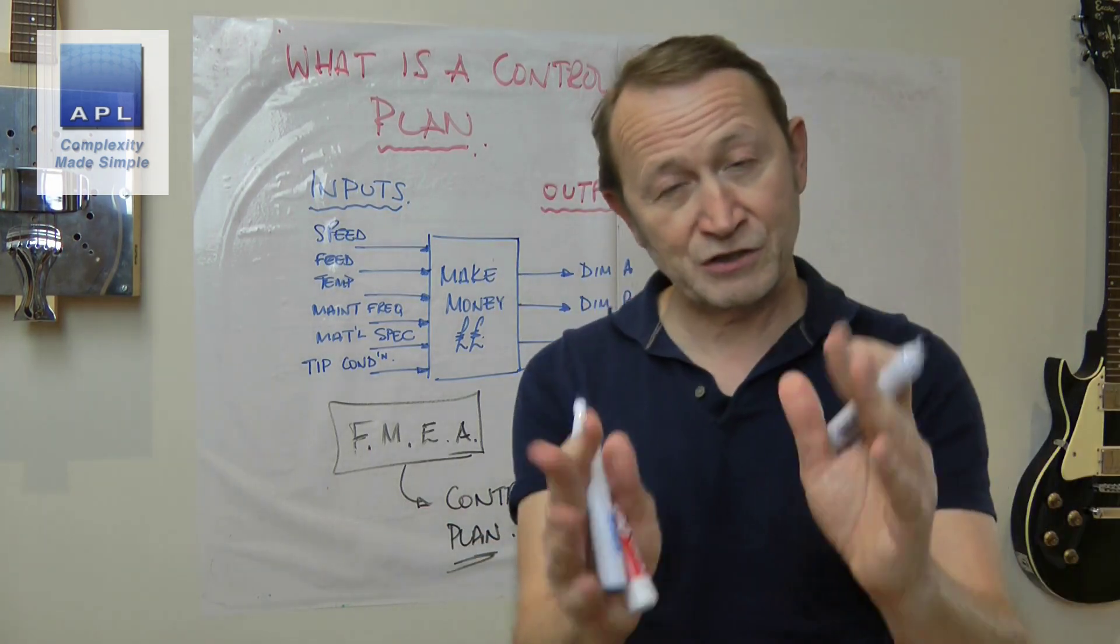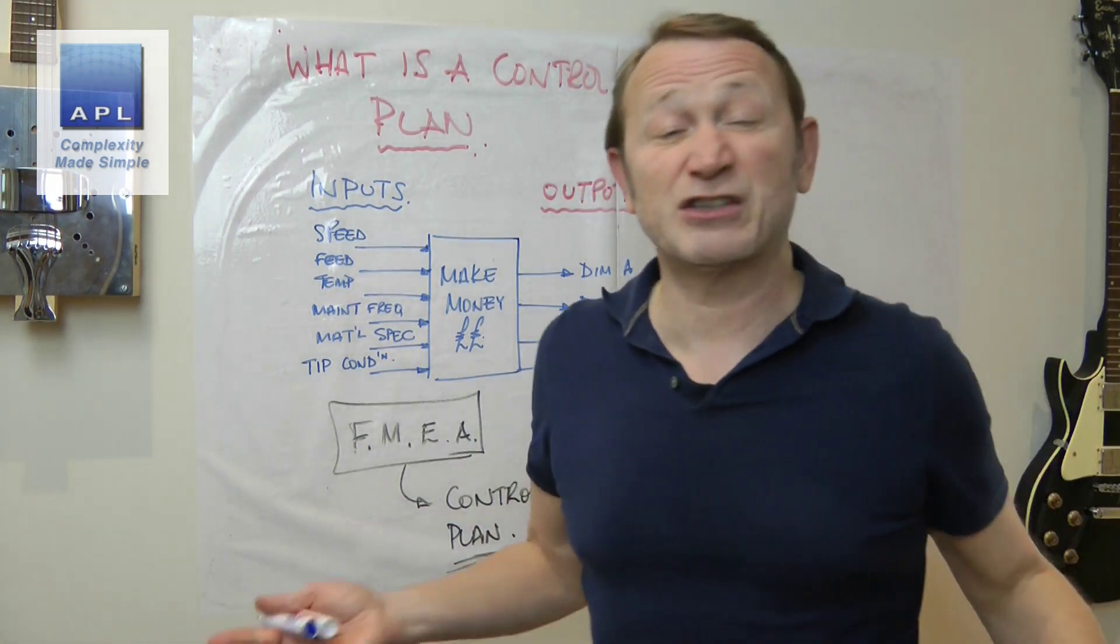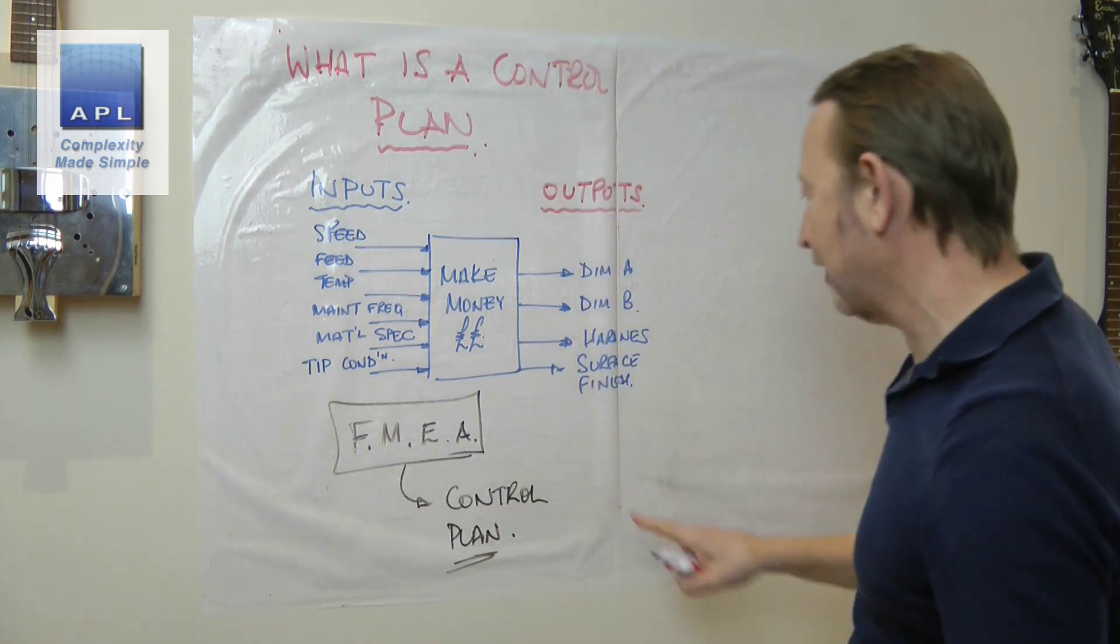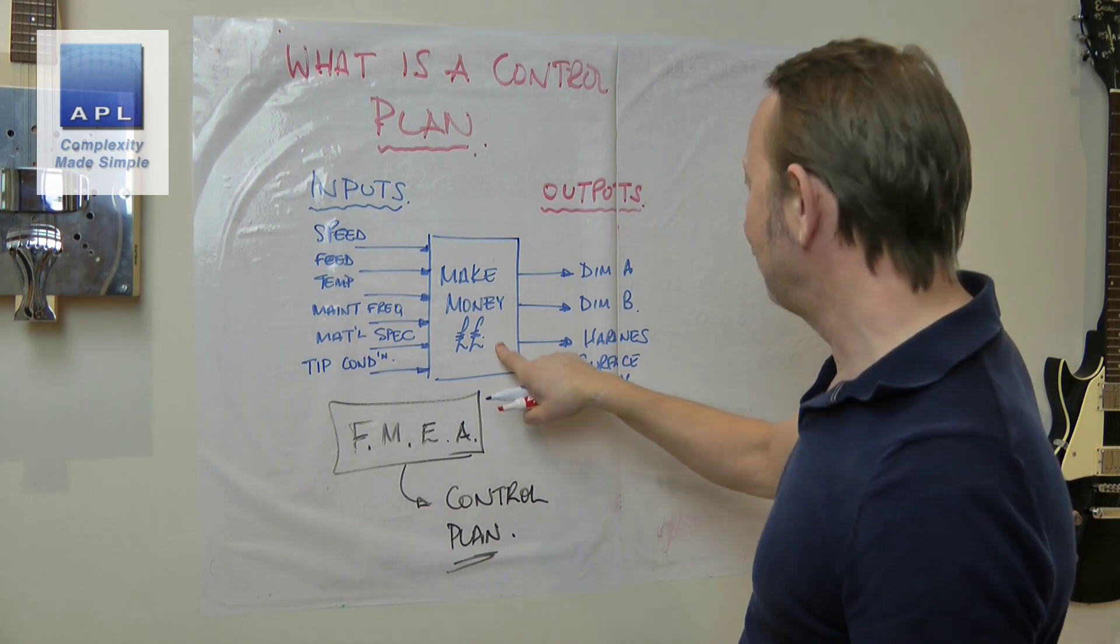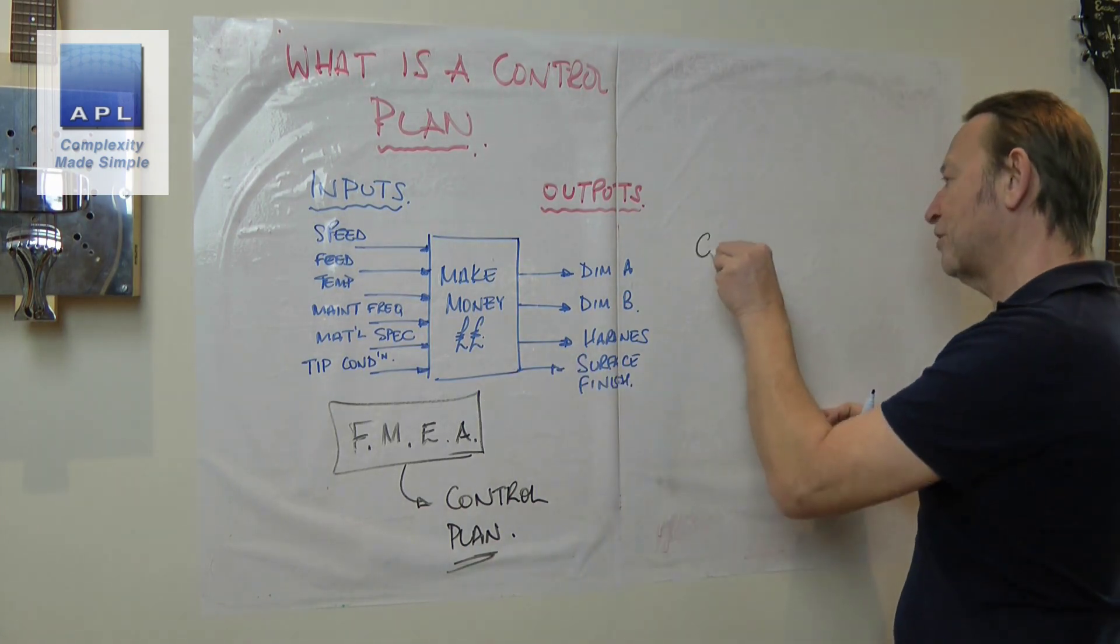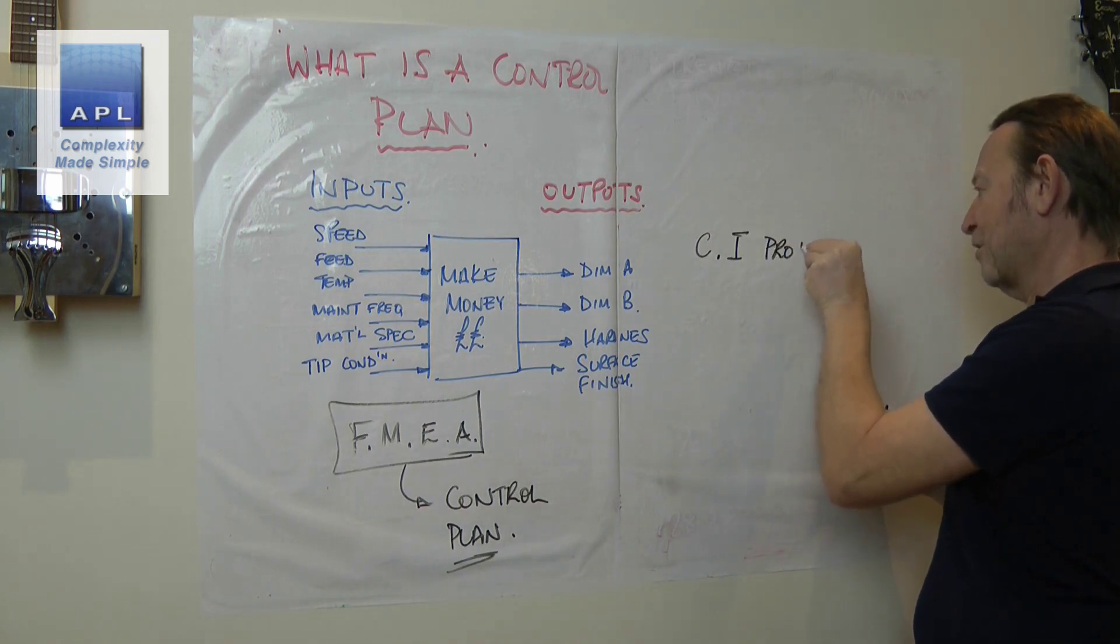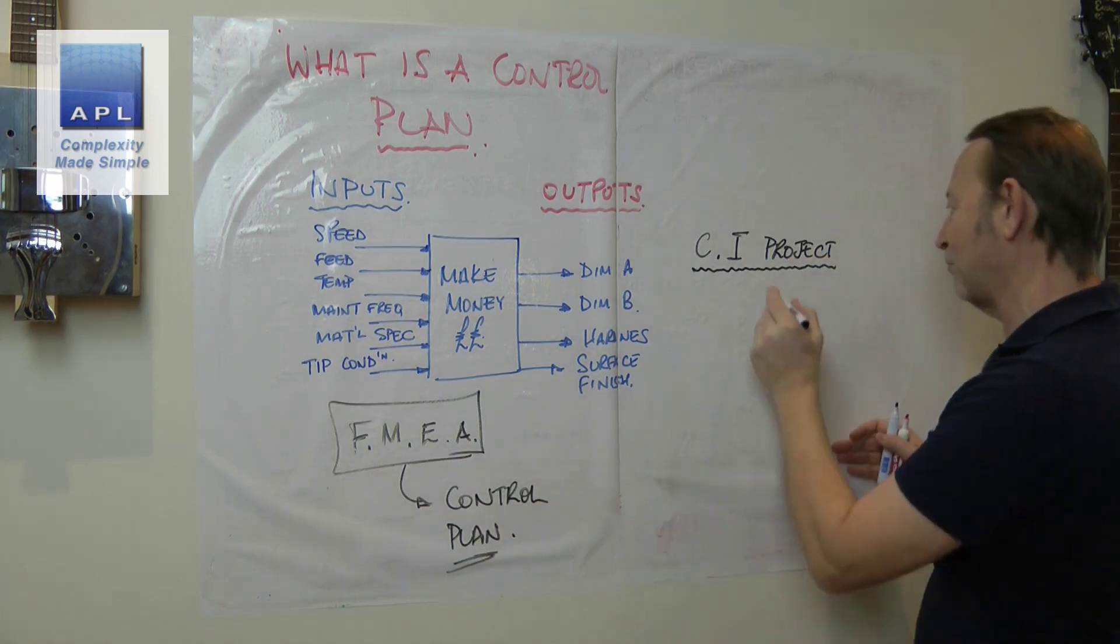If you've got this diagram in your head, if you get your money-making process in your head or you get your money-making process on a piece of paper, everything makes sense. Now of course, what should you have done when you implemented this money-making process? You should have done an FMEA.